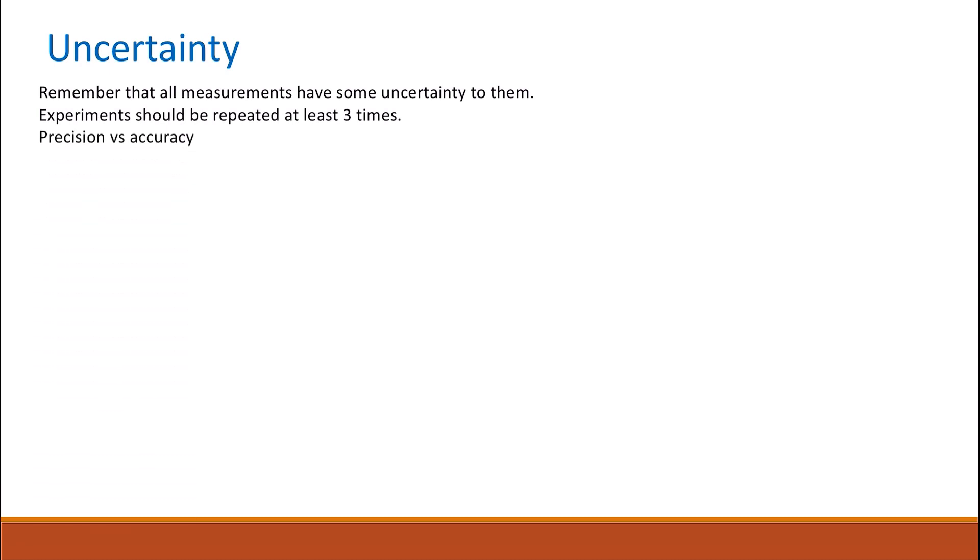Remember that we have two different things. The first one is the precision. The other one is the accuracy. Precision tells you how close your different measurements or different values are to each other. However, accuracy tells you how close this value is to the true value.